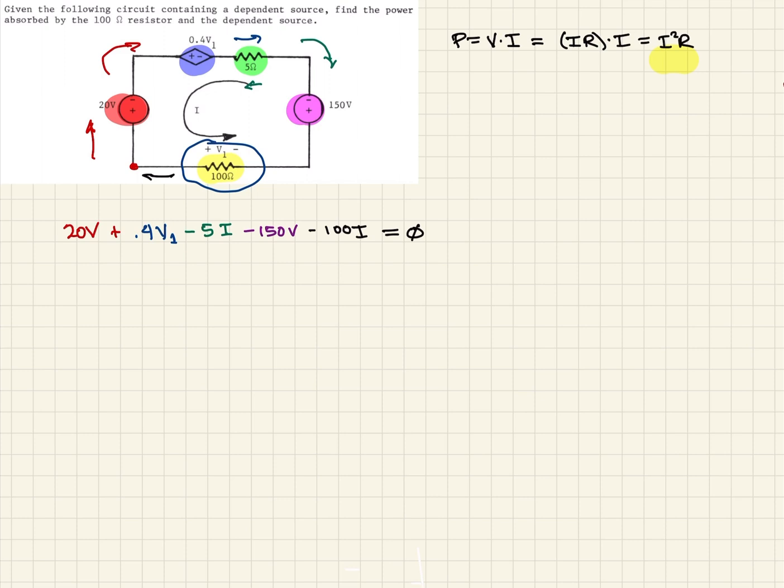We're going to utilize this device right here. We know what V1 is, right? It's just the current through the resistor, Ohm's law. So V1 is going to be equal to 100 times I. We're going to take this and substitute this in for that V1.